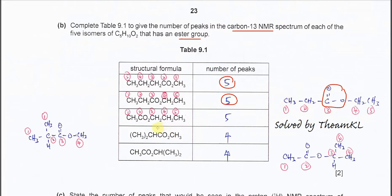For the third isomer, you count 1, 2, 3, 4, 5 non-equivalent carbons — so 5 peaks as well.